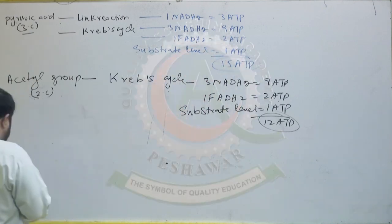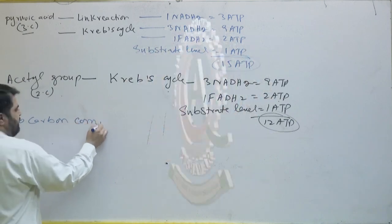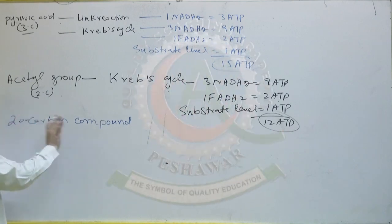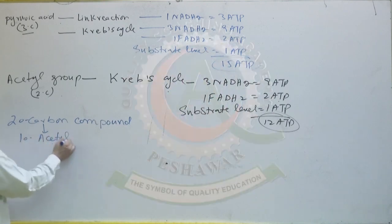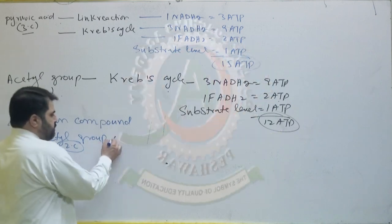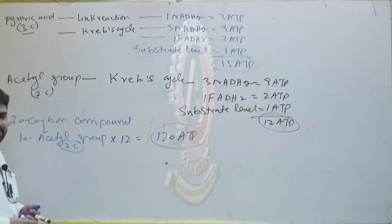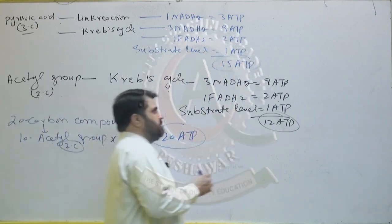If someone asks about a 20-carbon compound, a 16-carbon compound, or an 18-carbon compound — let's take the 20-carbon compound. A 20-carbon even compound can be converted into 10 acetyl groups, each acetyl consisting of two carbons. Since one acetyl group produces 12 ATP, 10 acetyl groups will produce 120 ATP. Of this 120 ATP, 110 are oxidative while 10 ATP are substrate level.